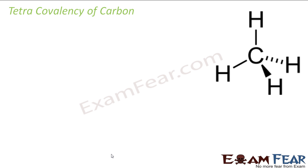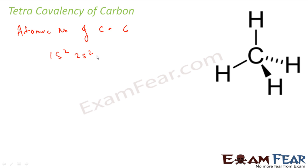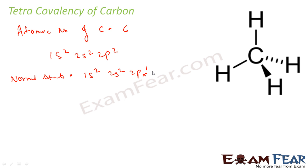Because carbon has a good property to concatenate — they form big chains, and it's all because of the tetra-valency of carbon. The atomic number of carbon is 6. So the electronic configuration is 1s2, 2s2, 2p2. In the normal state, the electronic configuration will be 1s2, 2s2, 2px1, 2py1, and 2pz will be empty.